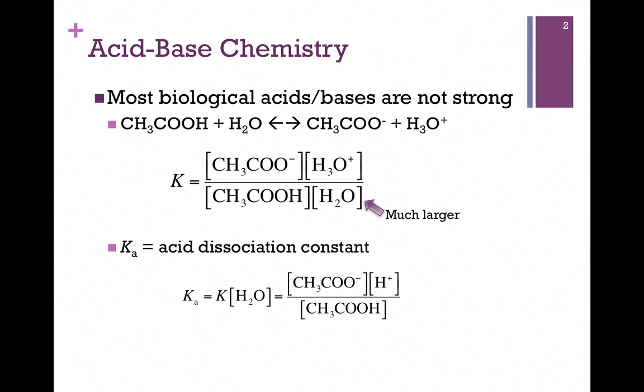We're going to do the same thing we did last time in the expression for water - we're going to move the concentration of unionized water to the left of our expression. So here we have our equilibrium constant times the concentration of water, and we're going to refer to that as our acid dissociation constant, or Ka.